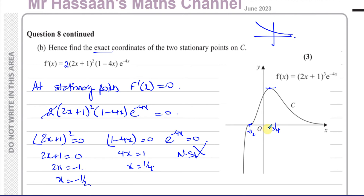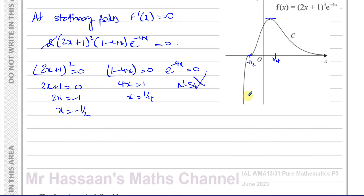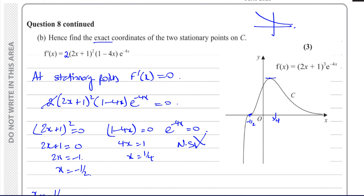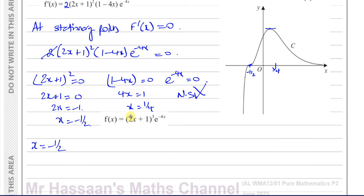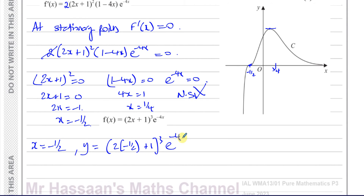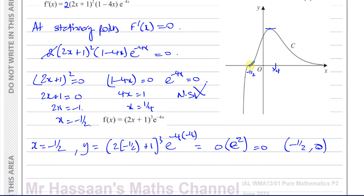To find the exact coordinates, we substitute into the original equation. When x equals minus one half: y equals 2 times minus one half plus 1, cubed, times e to the power of minus 4 times minus one half. That gives 2 times minus one half equals minus 1, so minus 1 plus 1 equals 0. So y equals 0, confirming the stationary point is on the x-axis at coordinates minus one half, zero.